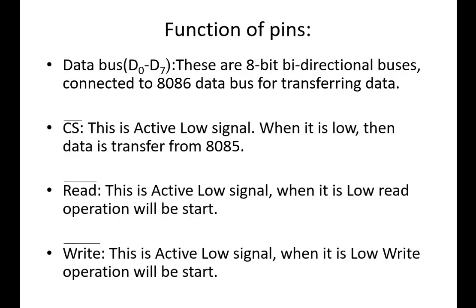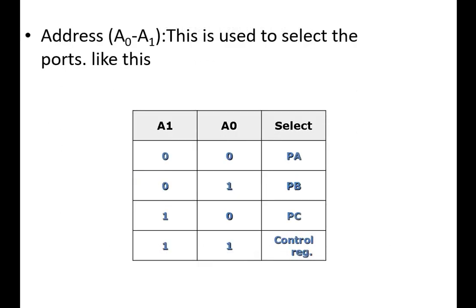Functions of pins: D0 to D7 are 8-bit bidirectional data buses. Chip Select (CS) is an active low signal. Read and write are also active low signals. In the address section we have A0 and A1. If the address is 00, we select Port A (PA). If the address is 01, we select Port B (PB). If the address is 10, we select Port C, and if the address is 11, we select the control register.